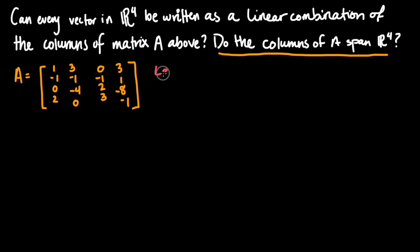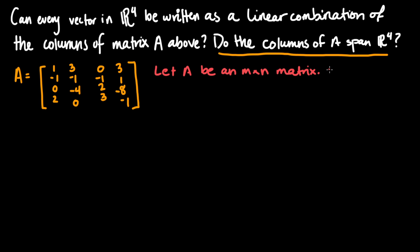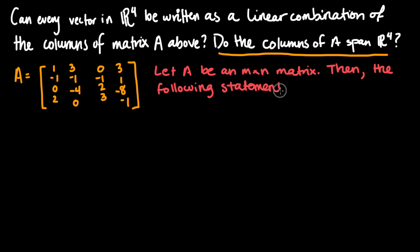Here's the theorem. Let A be an M by N matrix — that means it has M rows and N columns. Then the following statements are logically equivalent. This means that if one of these statements is true, all of these statements are true. And if one of the statements is false, then all of the statements are false — they are either all true or all false.